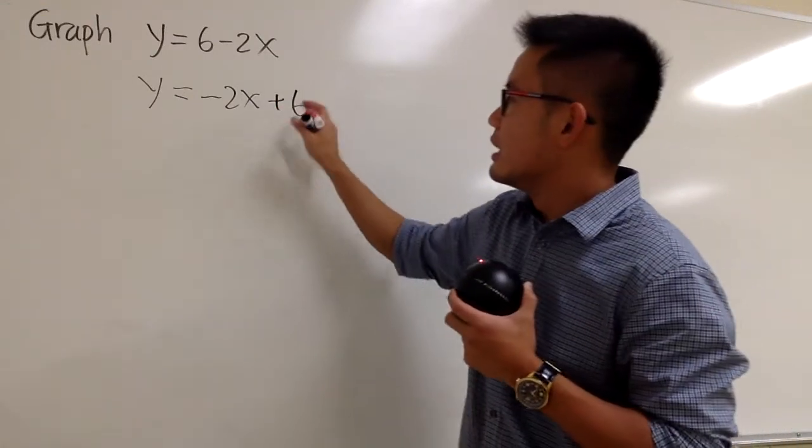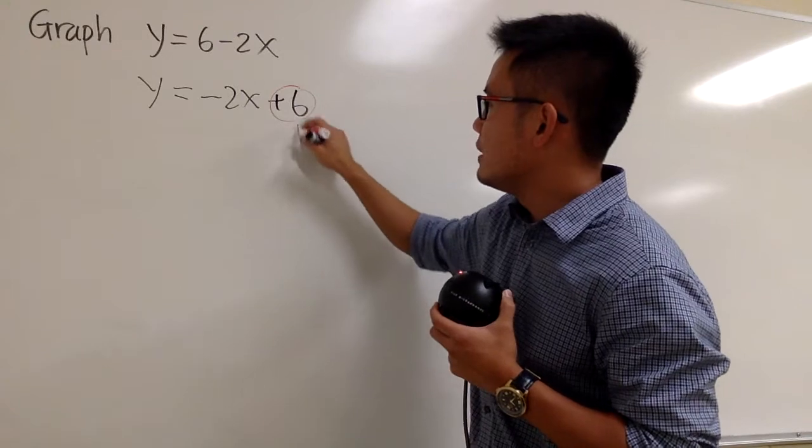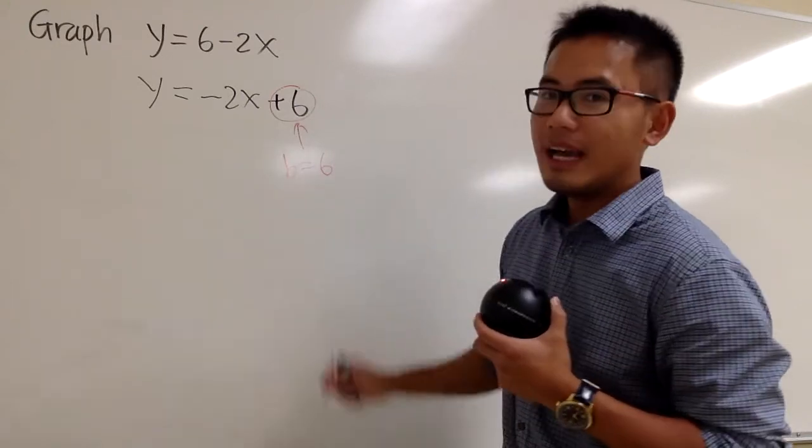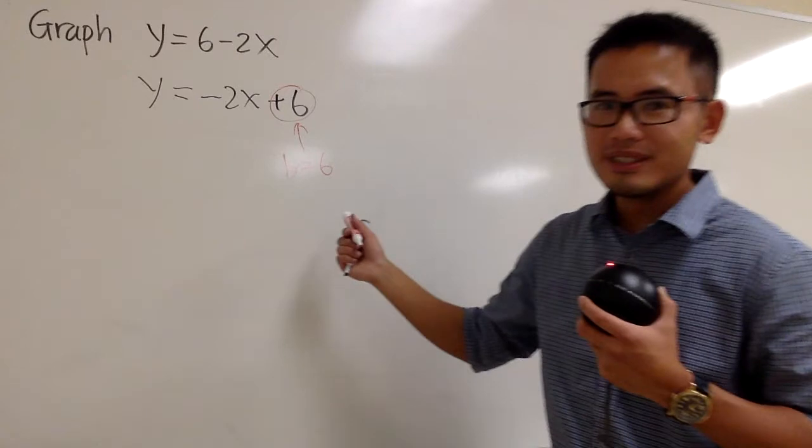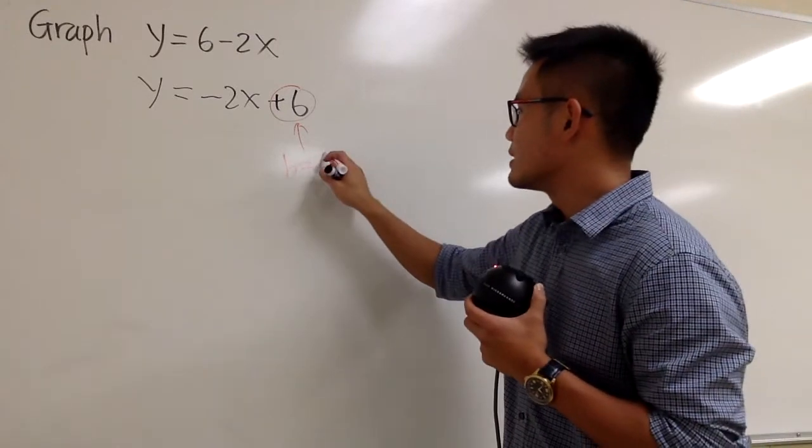And you see that this right here will be the b value. b is equal to 6. And we should start with this value first. b is equal to 6 right here.